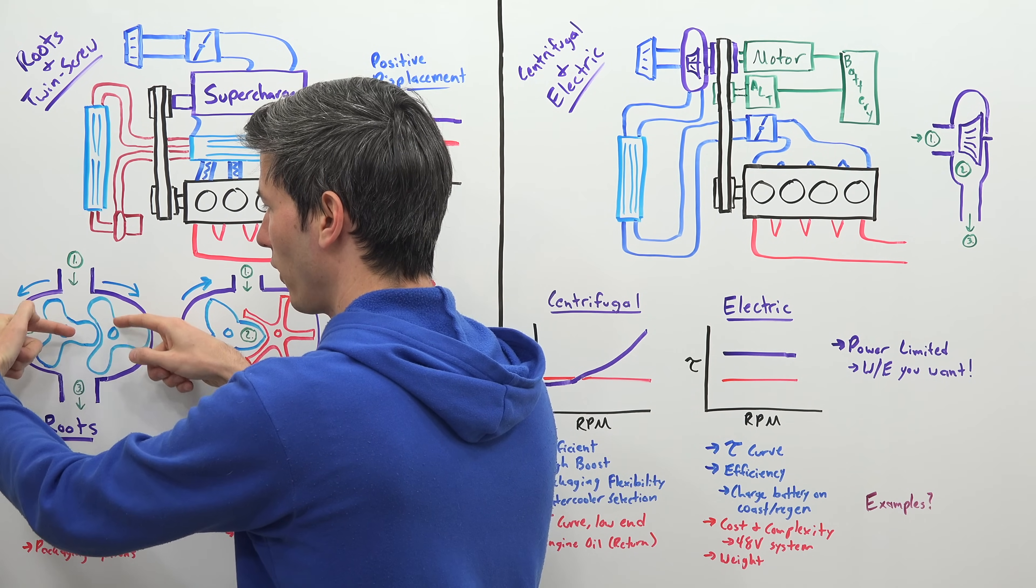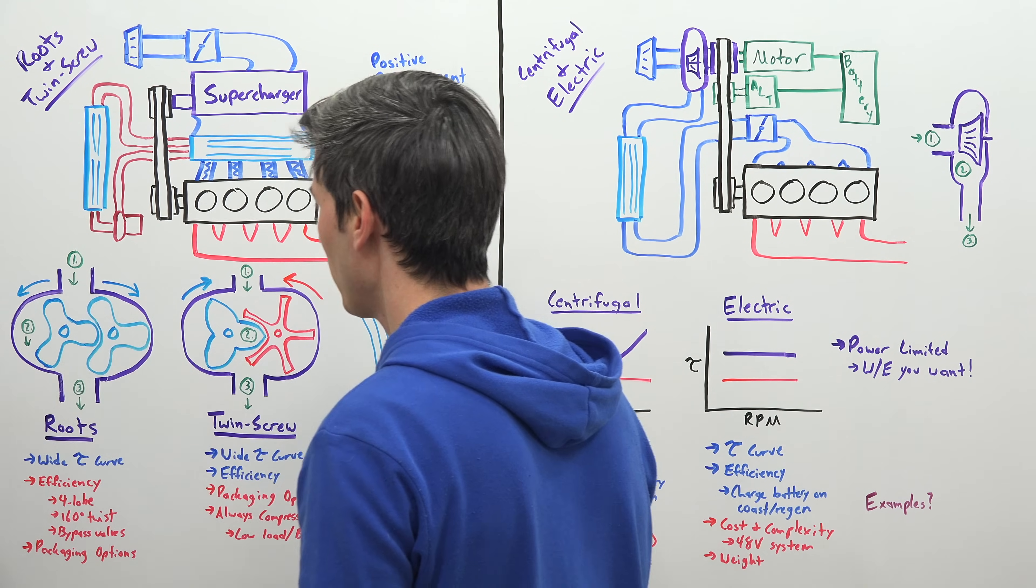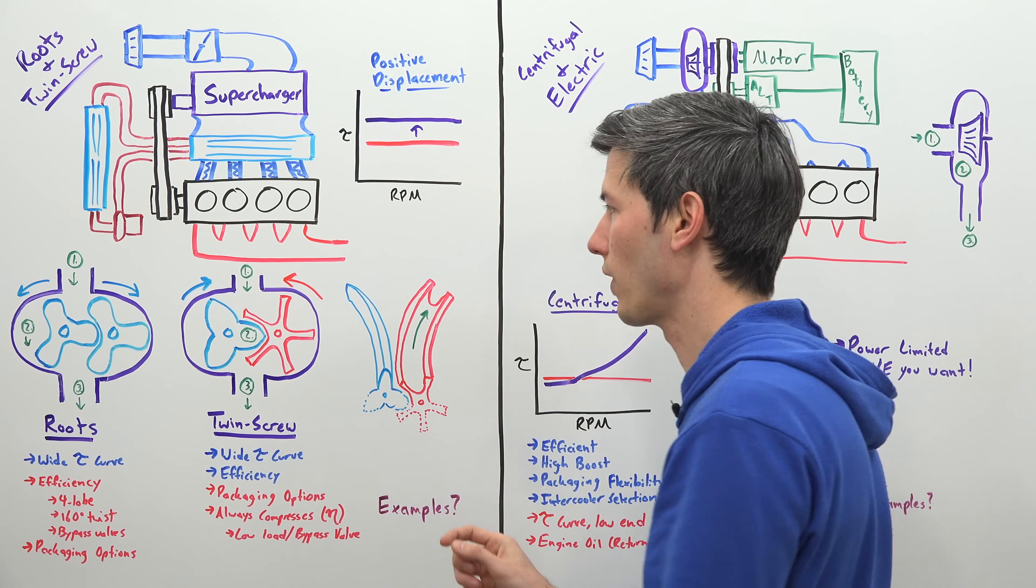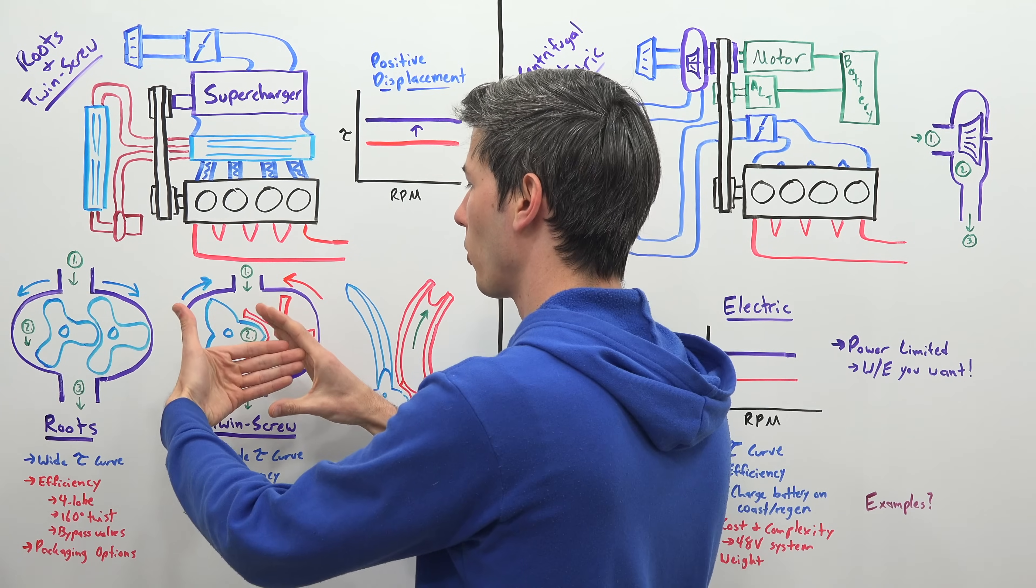it then gets sealed against the body of that housing inside the supercharger and then it's passed down below it. And then as you can see these rotors mesh together so they prevent any air from coming back up to the intake. With a twin screw style you have two different rotors here and so one meshes within the other